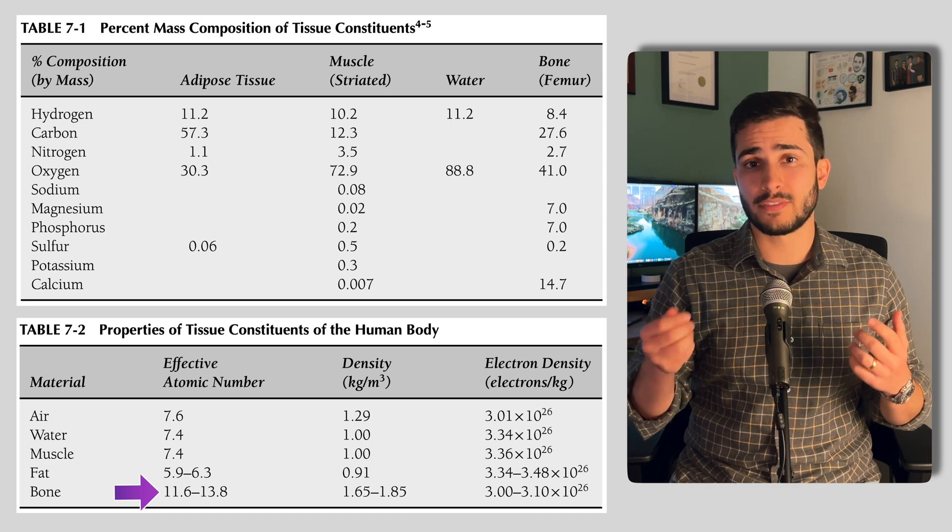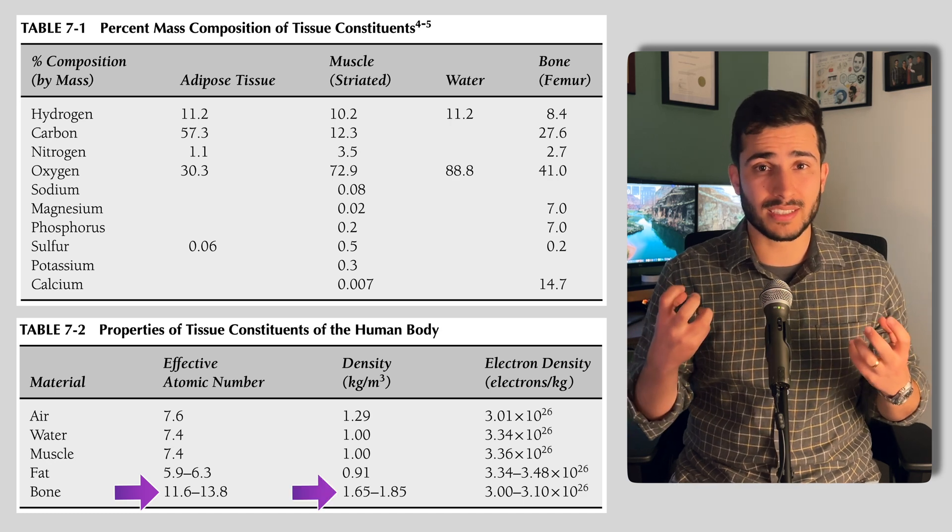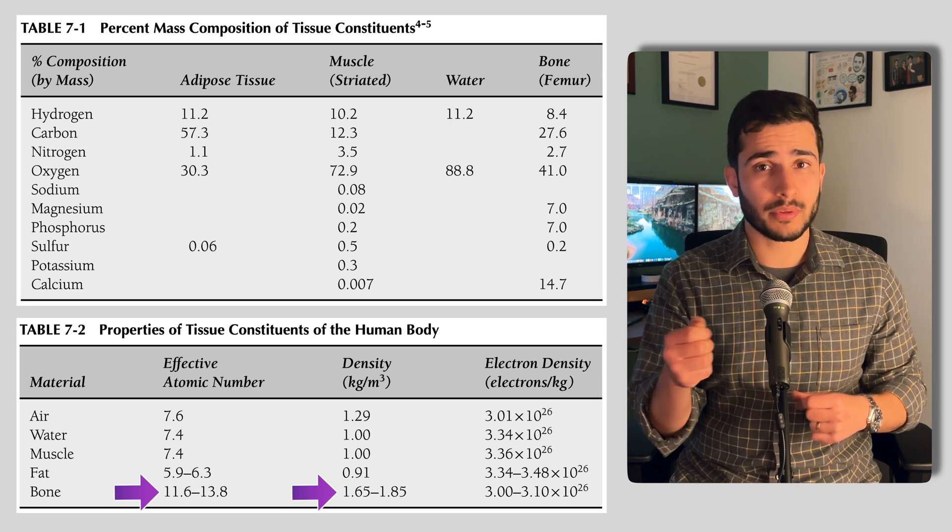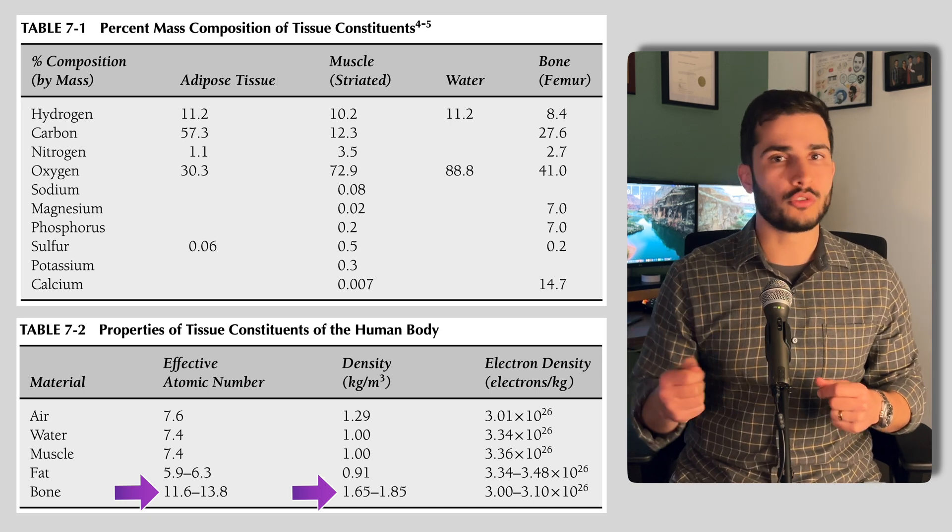Whereas when you look at bone, it has an effective atomic number or physical density that's greater compared to soft tissue. So we can say that X-rays are attenuated more rapidly in bone than in equal volumes of soft tissue.